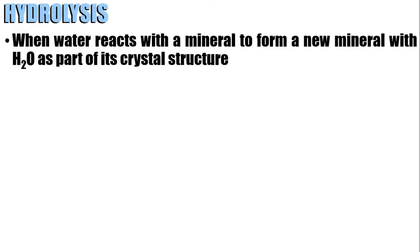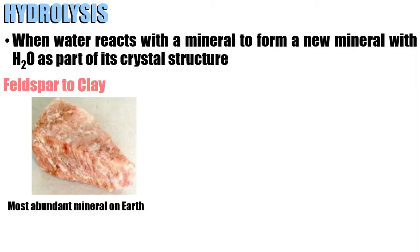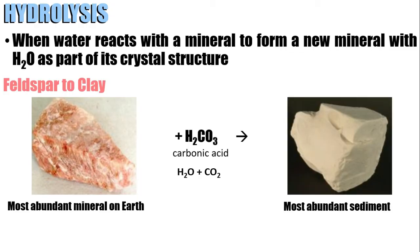Next, we have hydrolysis — basically, water plus mineral. One of the most common reactions is the conversion of feldspar to clay. Feldspar is the most abundant mineral on earth. When it combines with carbonic acid, it forms clay. Carbonic acid comes from rainwater plus carbon dioxide emitted by animals, people, and other things. This yields clay, which is the most abundant sediment.